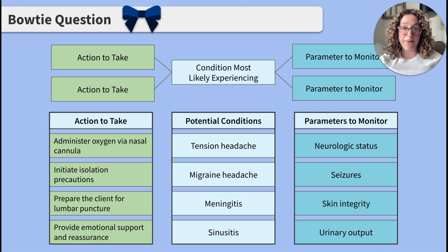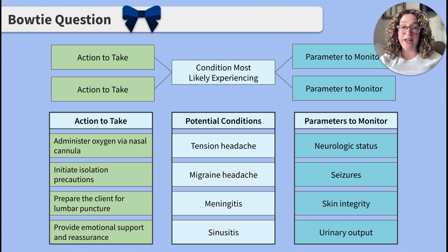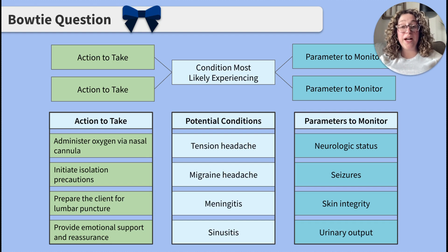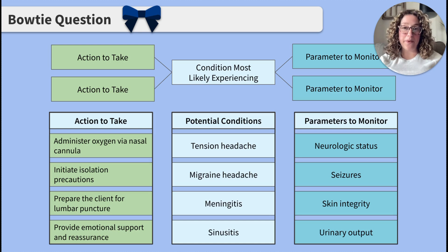Now on to the bowtie part of this question. You can see green boxes with matching green actions to take on the left, blue boxes with matching blue parameters to monitor on the right, and lighter blue potential conditions in the middle. On your NCLEX exam, you'll have a screen where you'll be able to select answer choices from the columns and drag the corresponding answer choices into the blank boxes. Take a moment to pause this video, select which answer choices you'd fill in the blank boxes with, and when you're ready, press play and we'll review together.